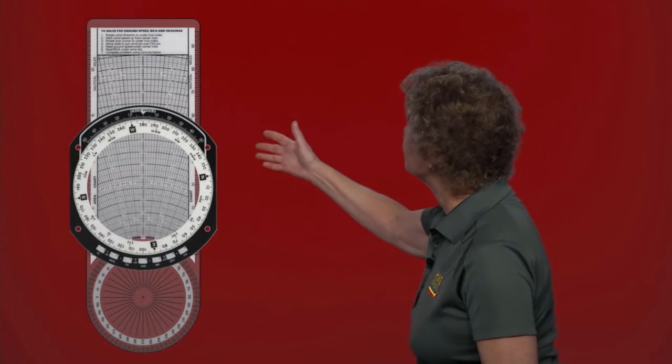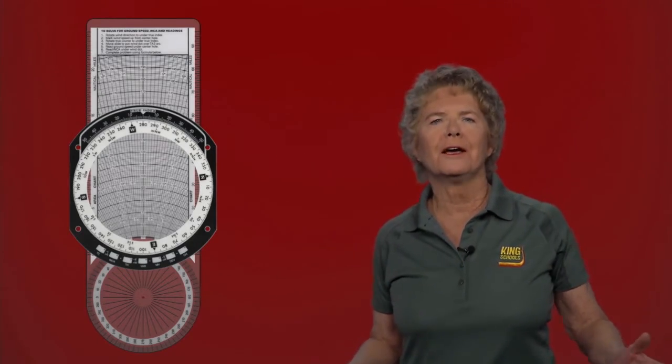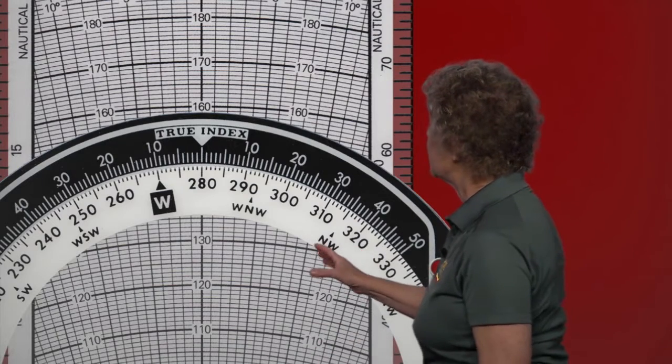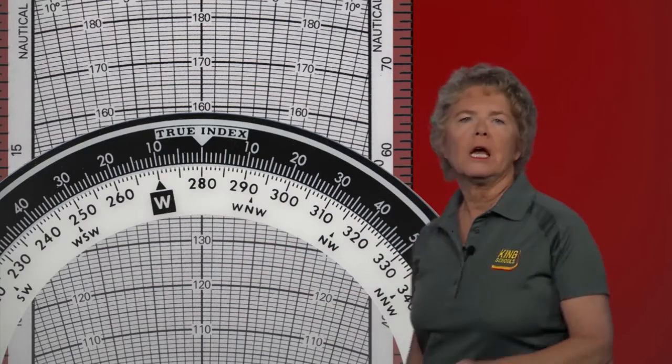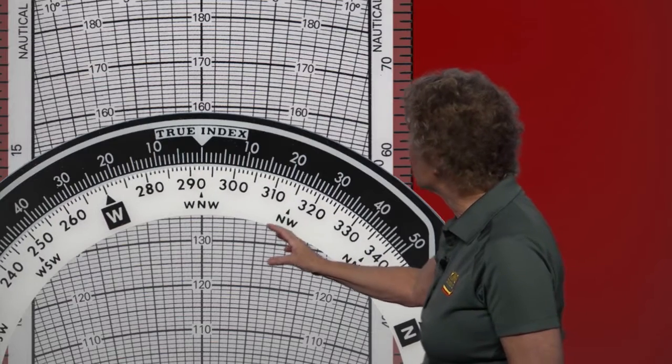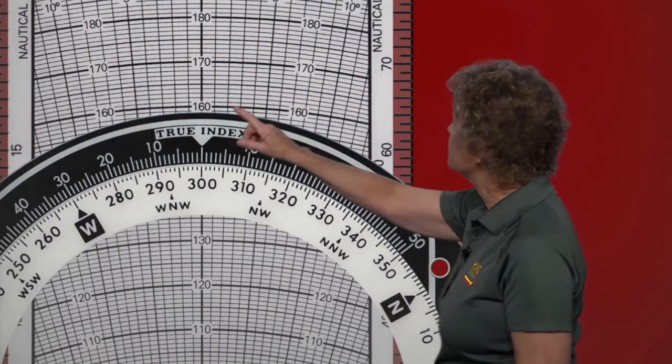When you get to the wind side of the flight computer, the first thing you always want to put on is the wind. Rotate the plastic disk in the center until the wind direction is underneath the true index at the top. The wind direction was given to us as 300 degrees, so rotate that clear plastic disk until 300 degrees is underneath the index at the top.